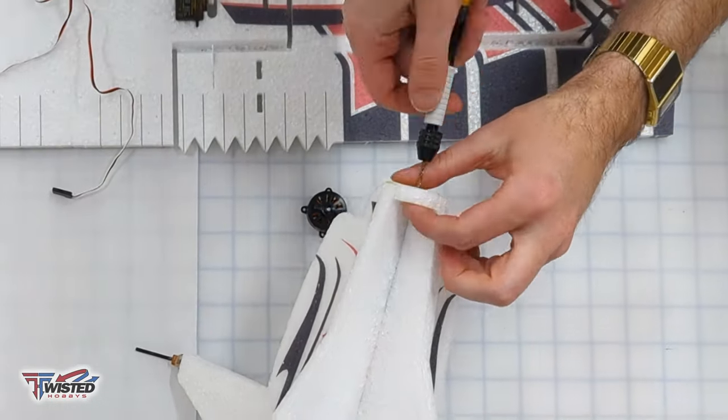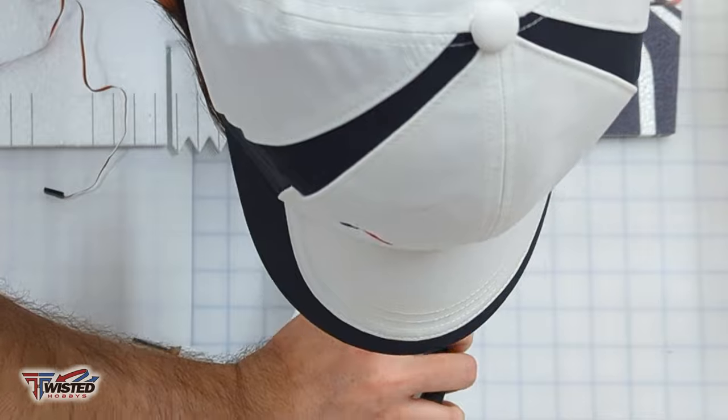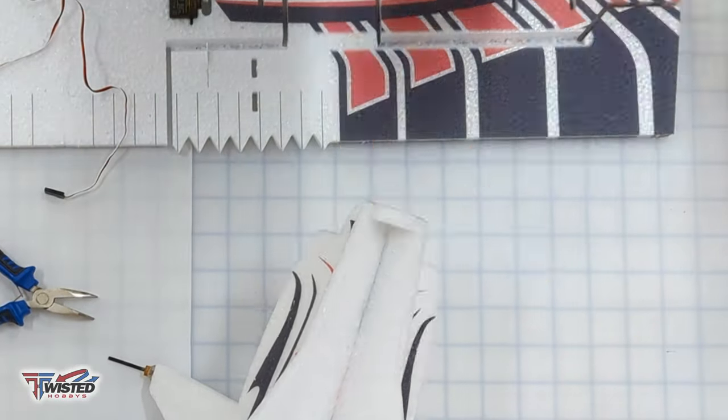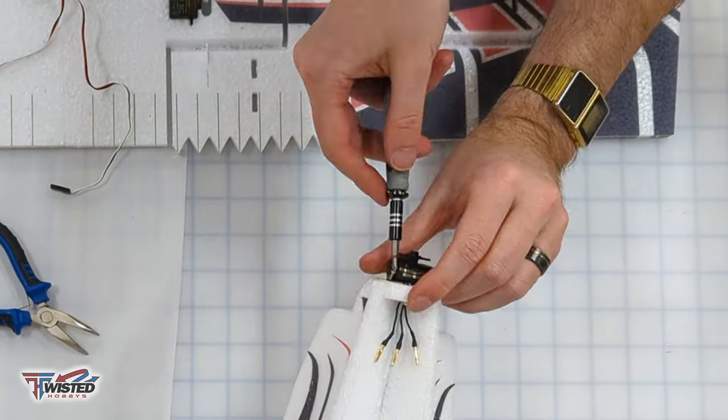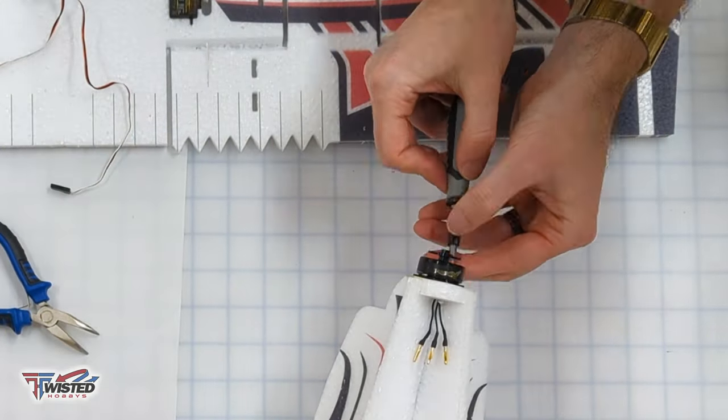Here I'm poking a little hole into the bulkhead at the motor mount to be able to pass through the motor wires and then you get them through and then you're able to secure the motor.